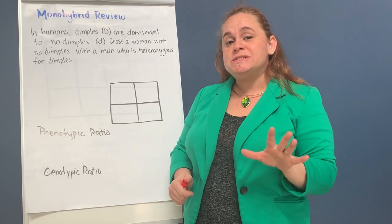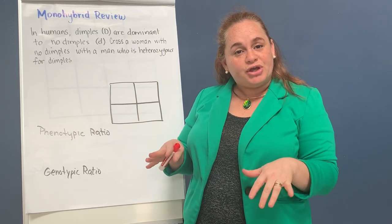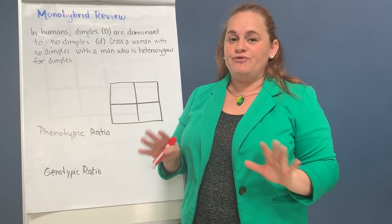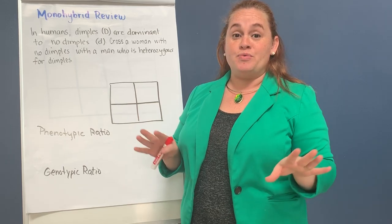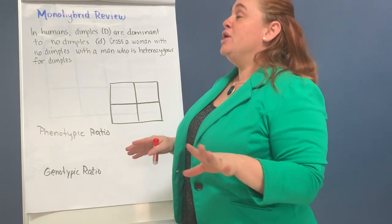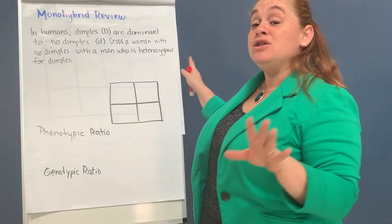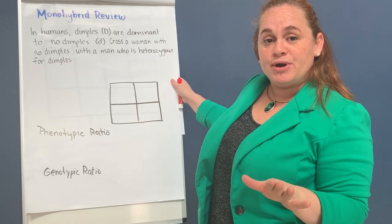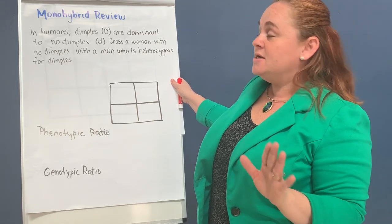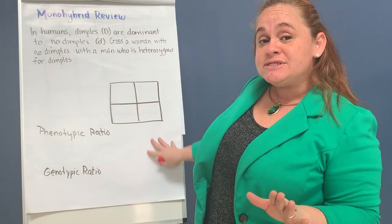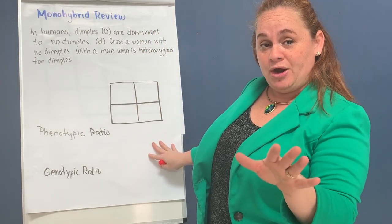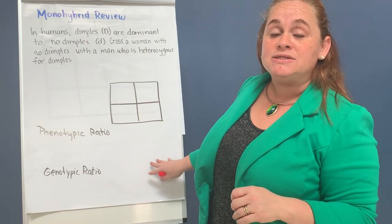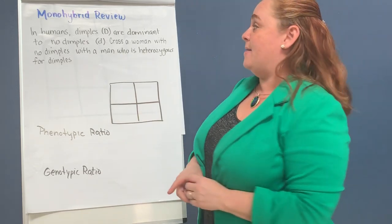Hi, scholars. This is just a quick review on Punnett Square for those of you that need a reminder of it. In your practice sheet, one of them is about monohybrid crosses. I've used the first example there, or the first premise on your practice sheet as an example.